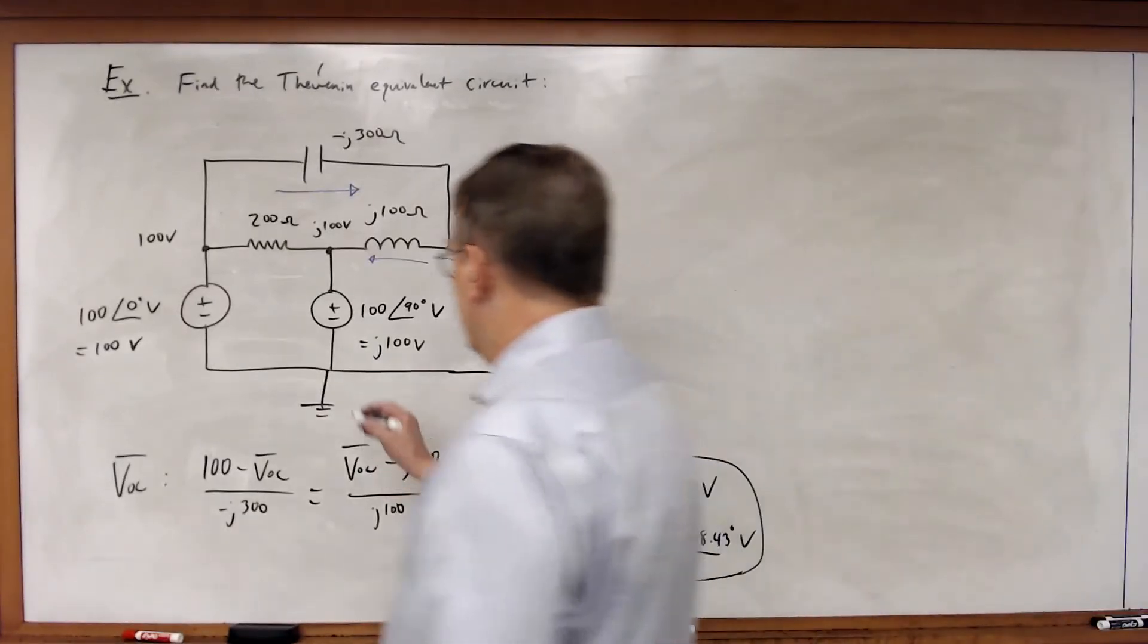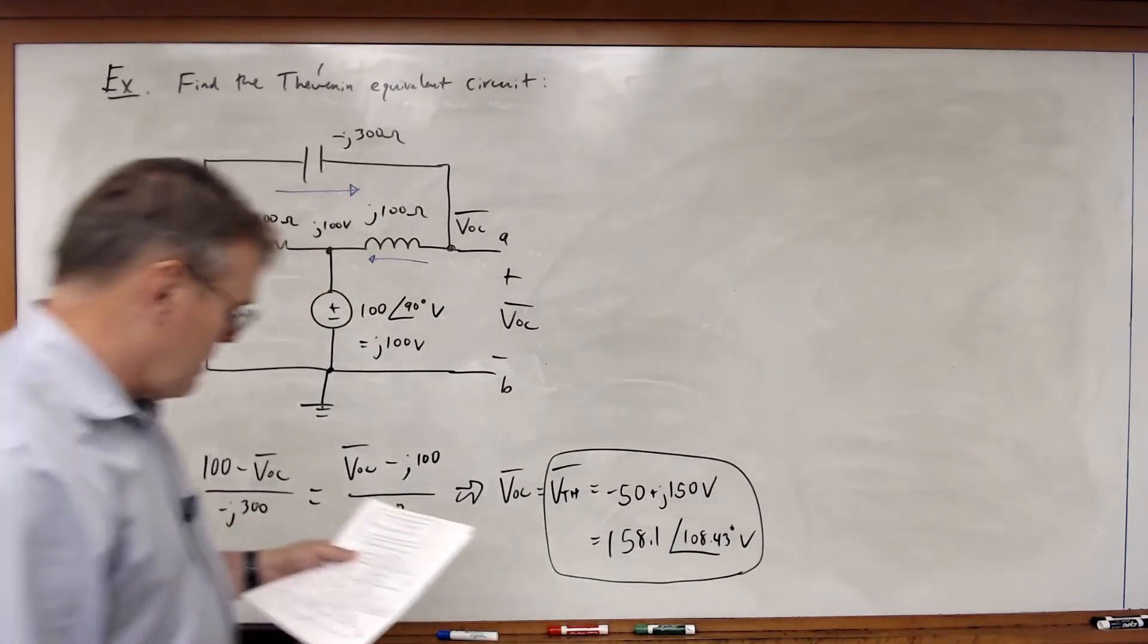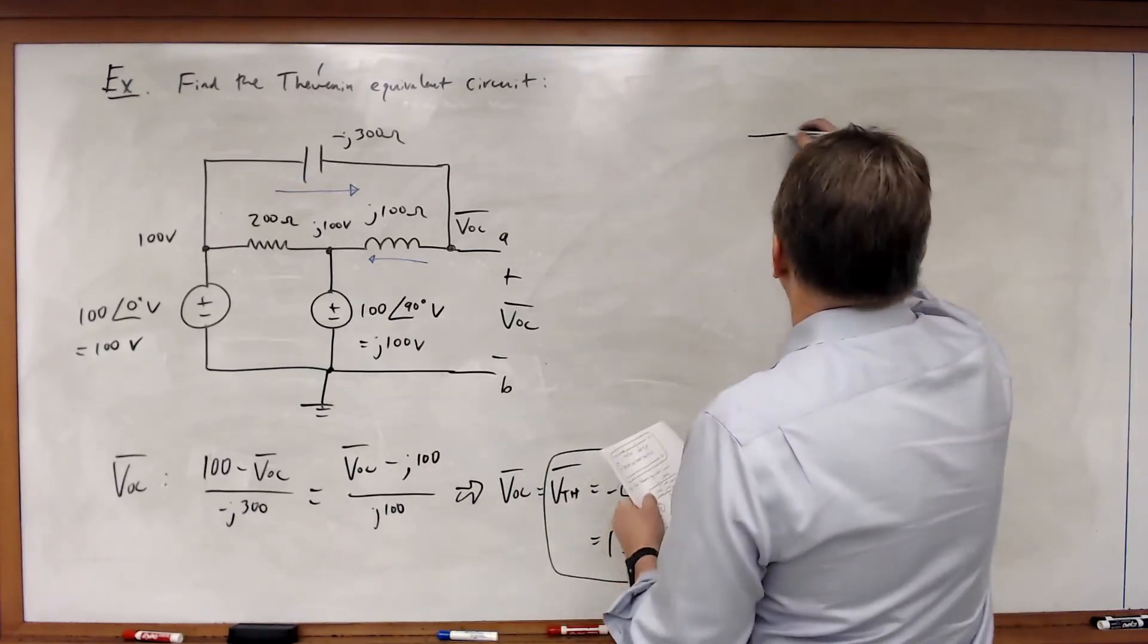Now let's look at the Thevenin equivalent impedance. If I zero out these two voltage sources, I wind up with this.